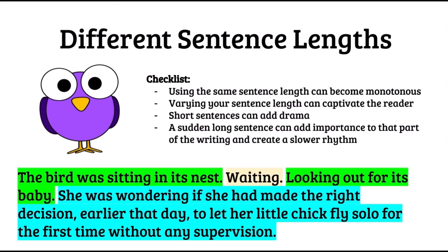Let's just have a tiny example of this. I have a bird here, and I'm going to use a medium sentence to start off with: 'The bird was sitting in its nest.' I want to try and captivate the reader, so I'm going to use a very short sentence to punctuate that there's something going on here: 'The bird was sitting in its nest, waiting, looking out for its baby.'